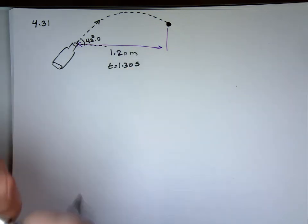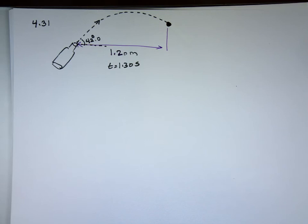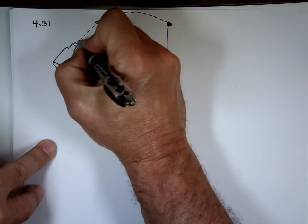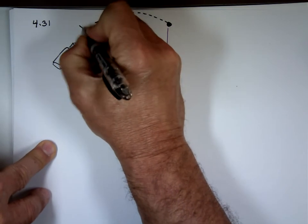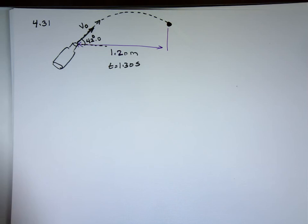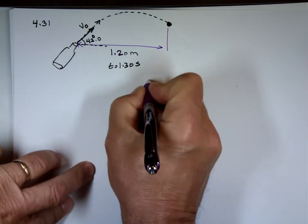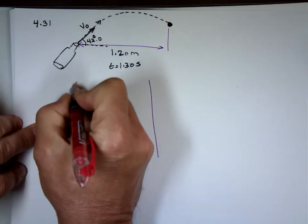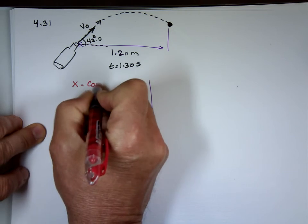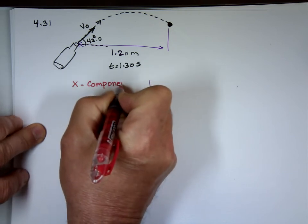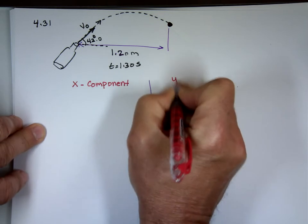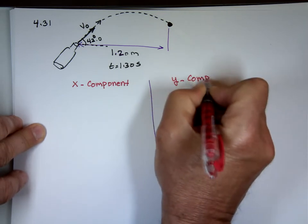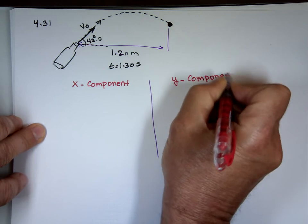The question is: what is the initial speed? This cork was fired in a direction at angle 42 degrees — initial speed V₀. This is a projectile problem again, so we break it down into x and y components.